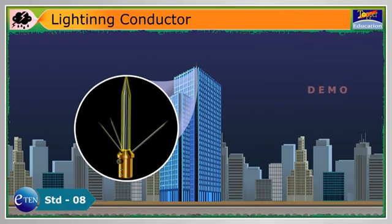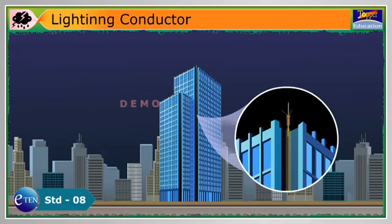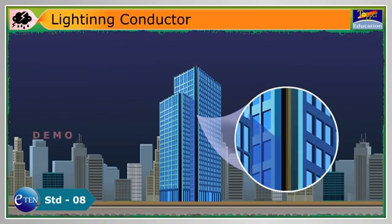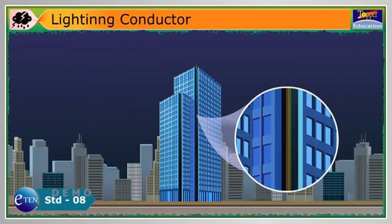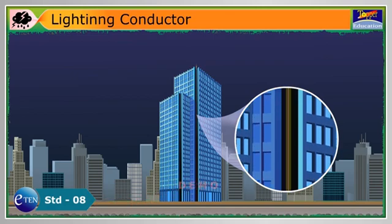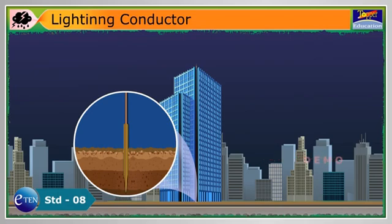The rod might be an inch or 2 cm in diameter. It connects to a huge piece of copper or aluminium wire that is also an inch or so in diameter. The wire is connected to a conductive grid buried in the ground nearby.